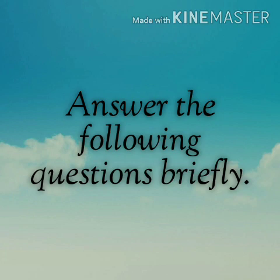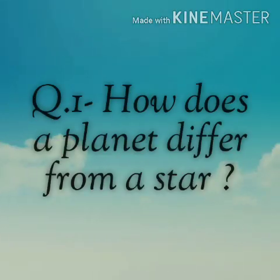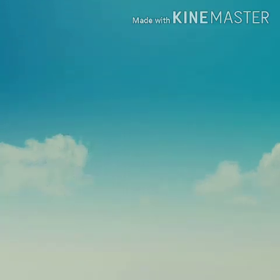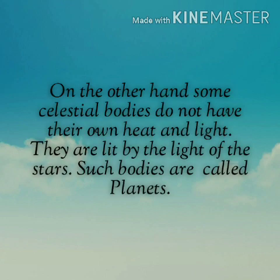Answer the following questions briefly. Question number 1: How does a planet differ from a star? Some celestial bodies are very big and hot. They are made up of gases and have their own heat and light — these are called stars. On the other hand, some celestial bodies do not have their own heat and light; they are lit by the light of the stars. Such bodies are called planets.